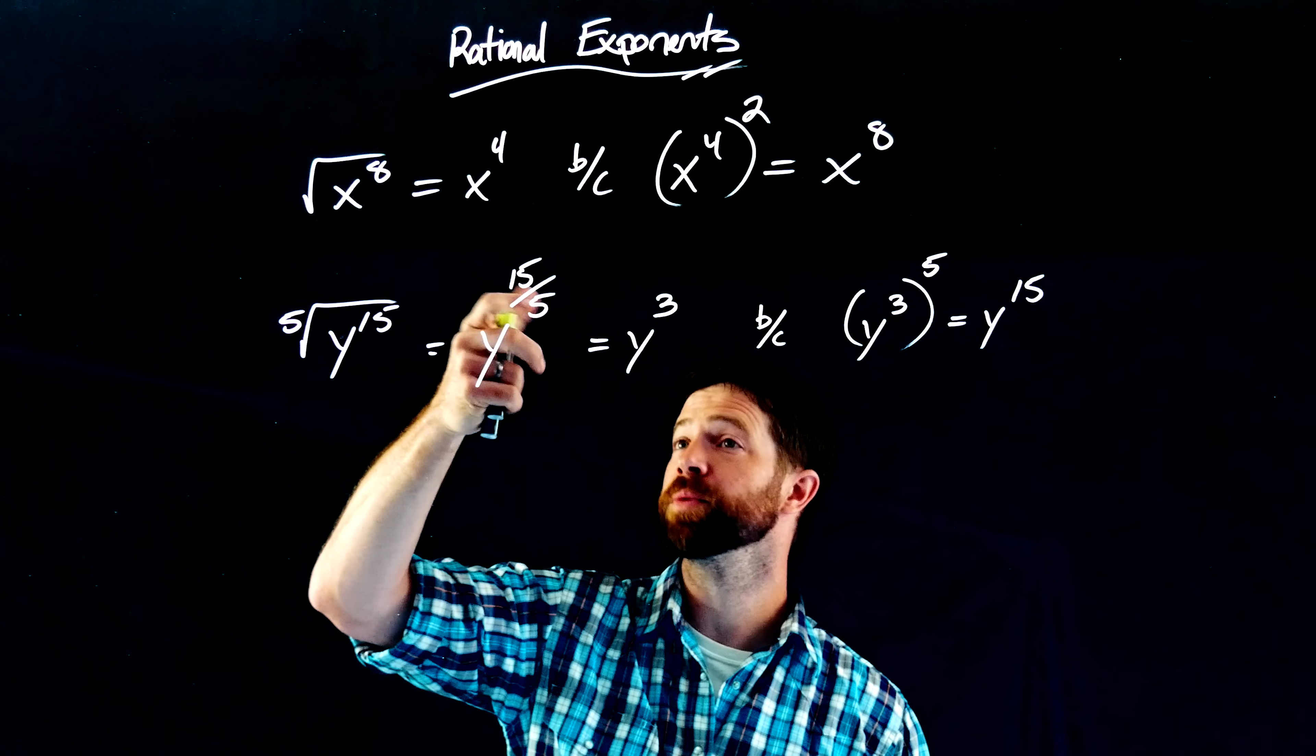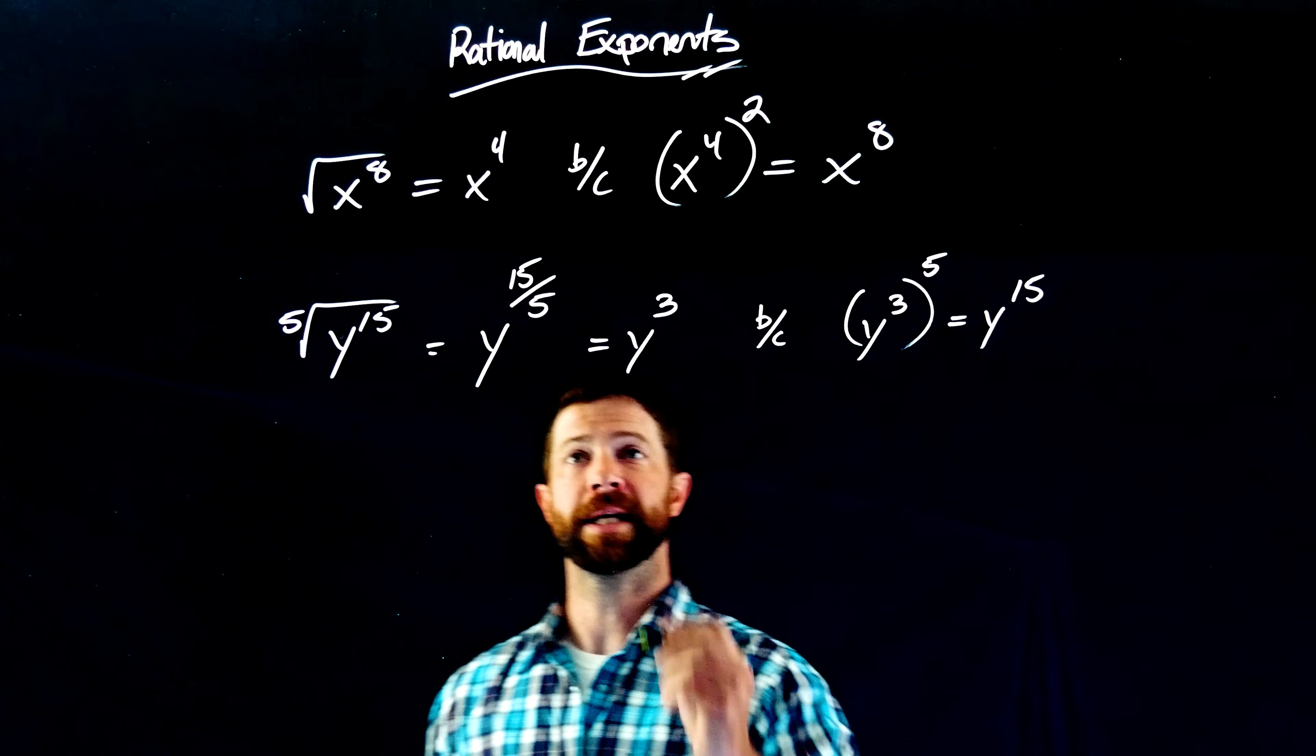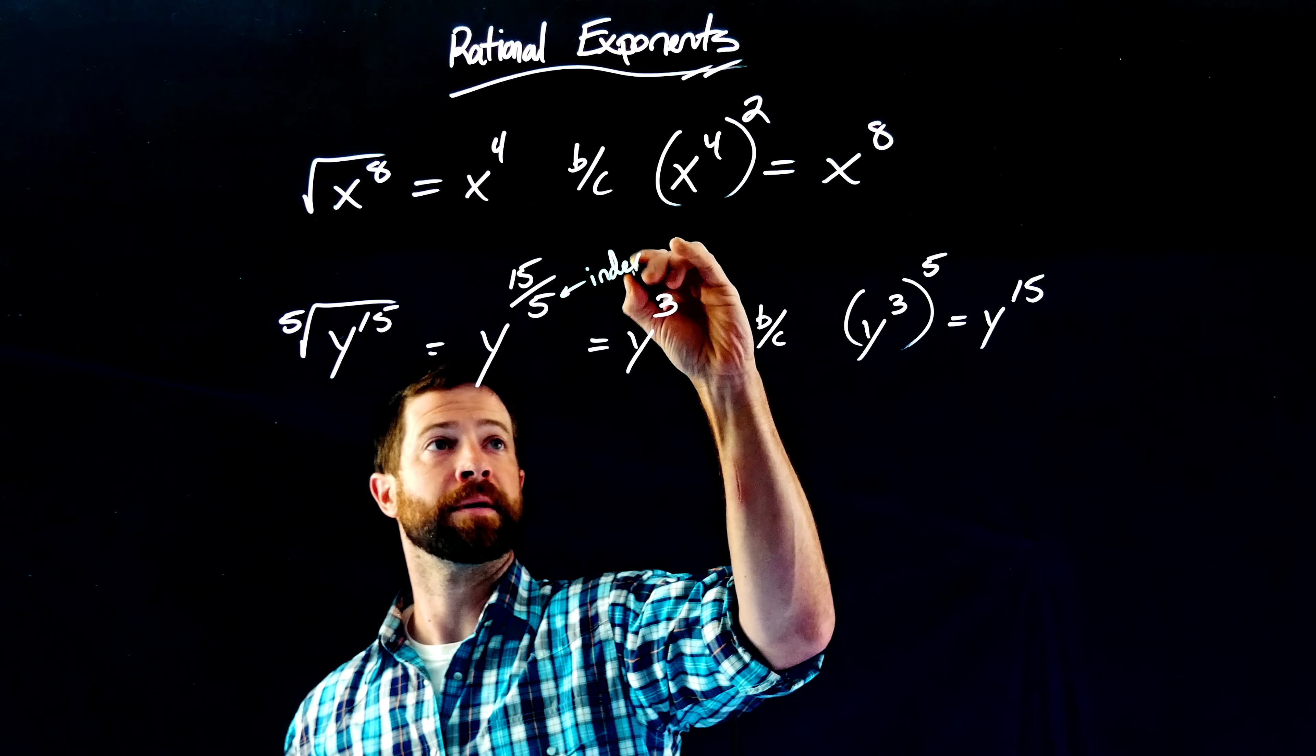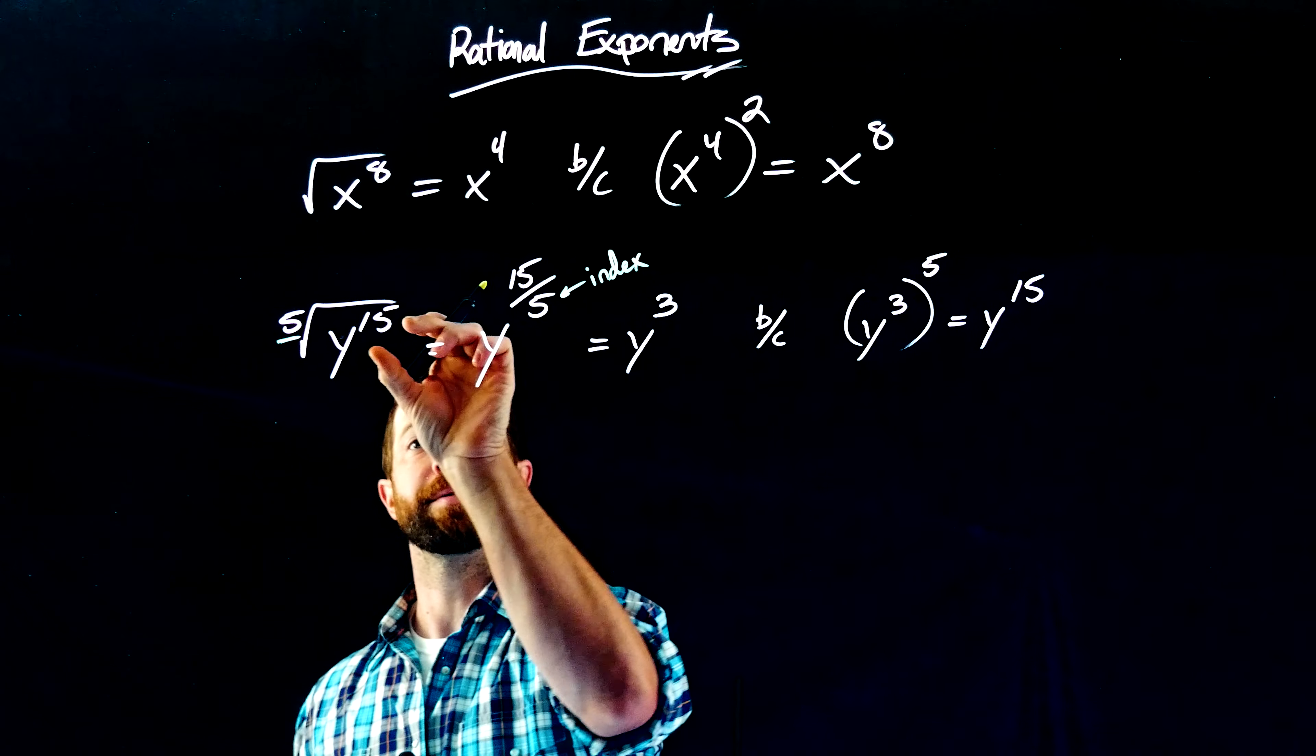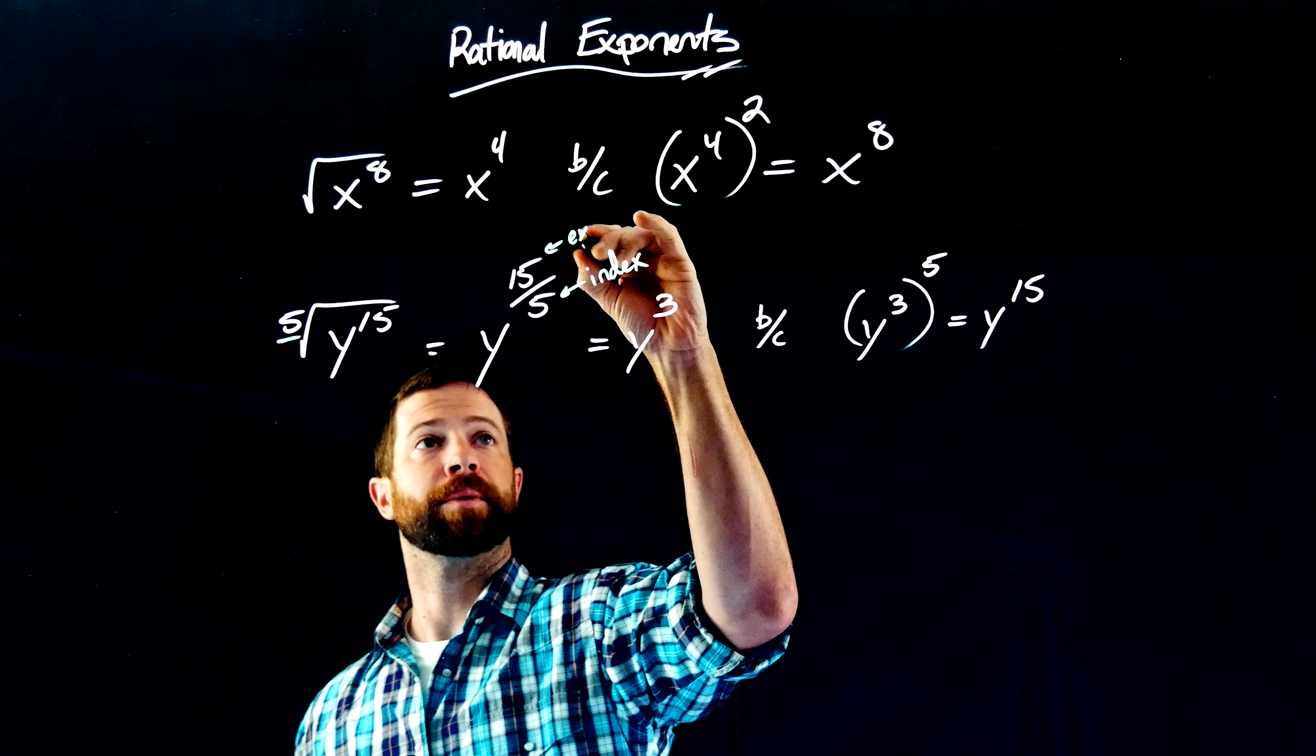You'll notice this actually, we think of it as division, but it's also a fraction. When you're looking at this right here, the denominator is the index of the radical over here, and the 15 is the exponent of this expression right there. So I'll just call this the exponent.